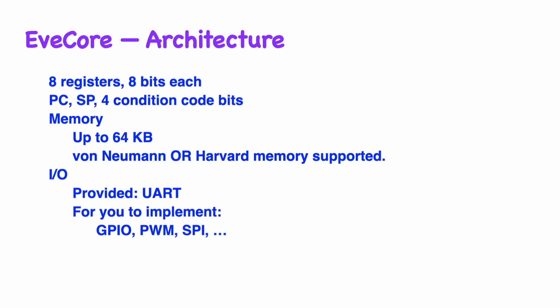The Harvard implementation might be appropriate for microcontrollers where the program is preloaded into a flash memory. We also have instructions for input and output to various peripheral devices, and the implementation on the website provides a UART interface for serial communication. If you want other peripherals you are free to implement them — for example, general purpose I/O pins, pulse width modulation, an SPI interface, and whatever else you can think of.